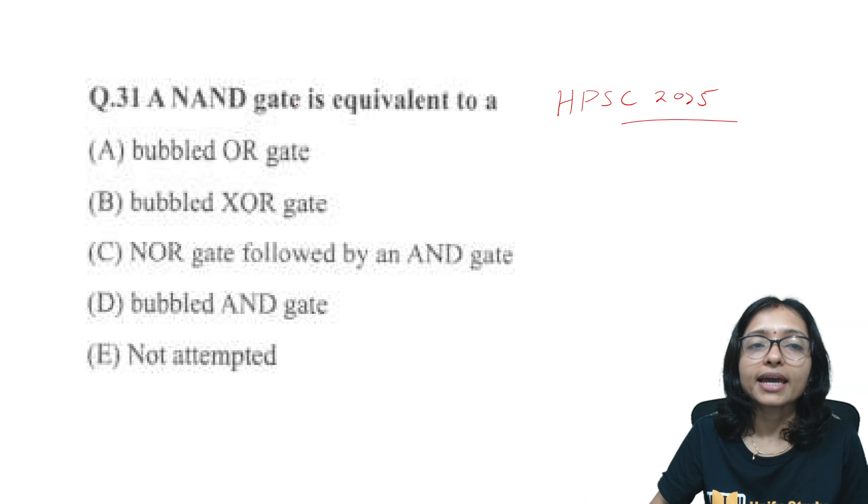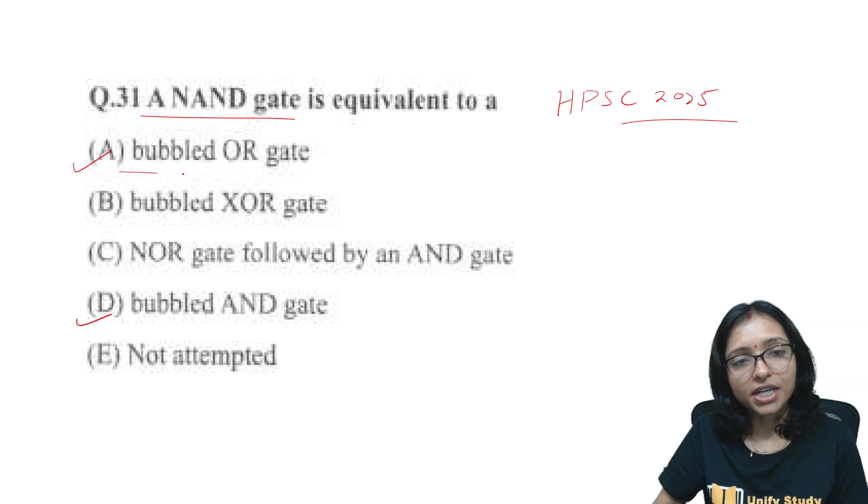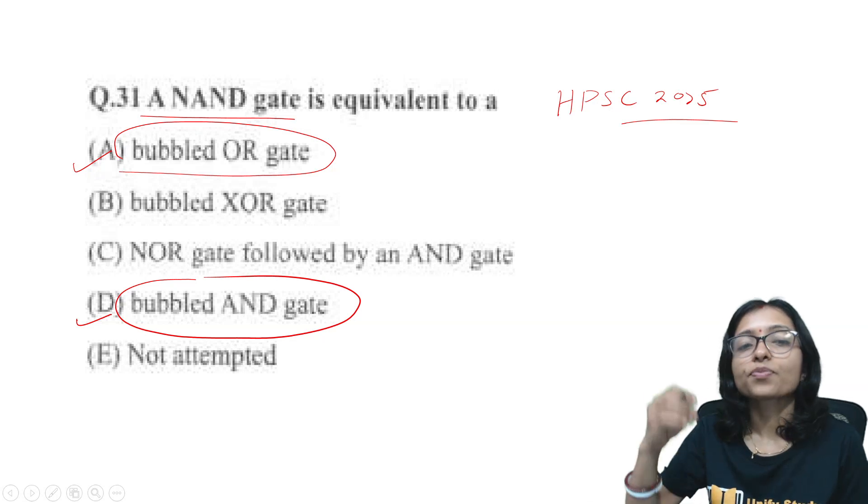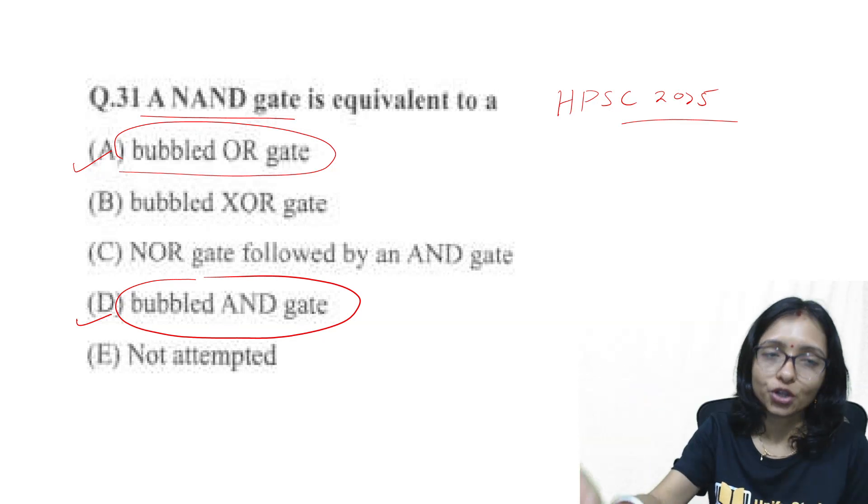Actually, NAND gate is equivalent to bubbled AND gate or bubbled OR gate. Official answer key is given bubbled OR gate and I gave that bubbled AND gate. Now which one is the correct answer and should we challenge it or not.